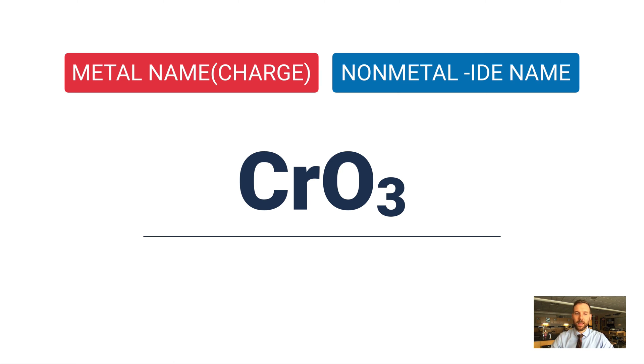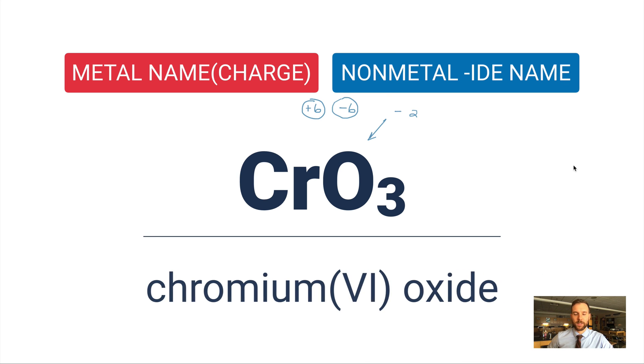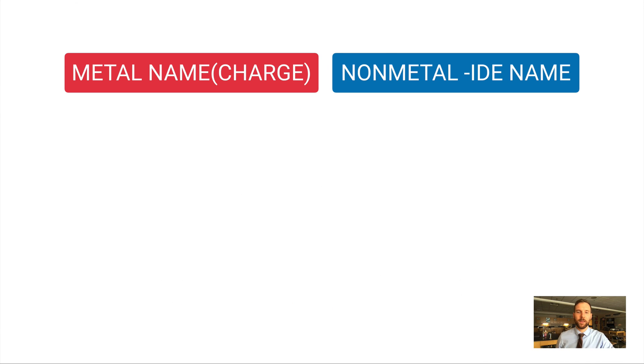Here we've got chromium and oxygen. Oxygen has a negative two charge; there are three oxygens, so from the negative side I've got a negative six charge. The positive side has to be positive six to make this neutral. There's only one chromium atom, so this must be chromium(VI)—check your periodic table. It's chromium(VI) oxide.